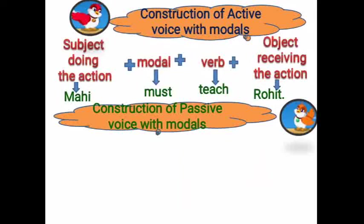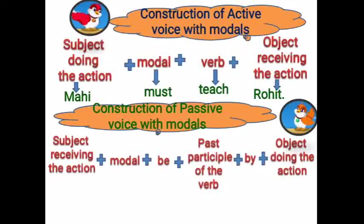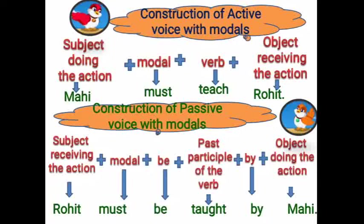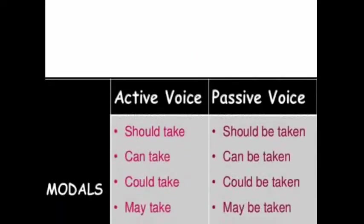Now, the construction of passive voice with modals: the subject and object exchange their places. The structure is: subject receiving the action + modal + be + past participle of the verb + by + object doing the action. Example: Rohit must be taught by Mahi. We need to follow the same rules of tense forms, exchange of object and subject, use the preposition 'by', and add 'be' along with the V3 form of the verb.